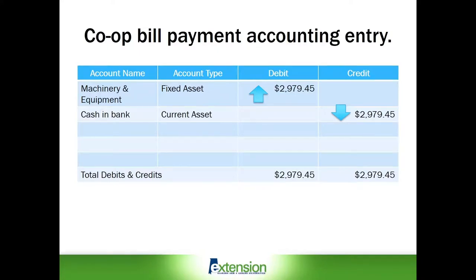Now let's briefly review the accounting entry for this check payment we just entered into Excel. In this example, the farm fixed asset account went up with a debit entry of $2,979.45. On the other hand, the cash and bank entry records that the farm balance sheet went down $2,979.45 — in other words, farm current assets decreased with this credit entry. Like all accounting entries, debit and credit entries must be in balance. In this example, total debits and credits are $2,979.45 for both.